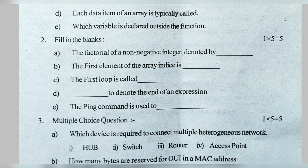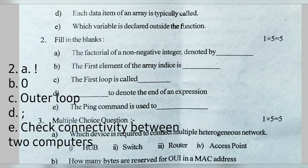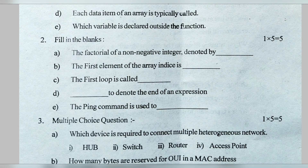Now fill in the blanks. (a) The factorial of a non-negative integer is denoted by the exclamatory sign — that means one line and below one dot. (b) The first element of an array index is zero. (c) The first loop is called the outer loop.